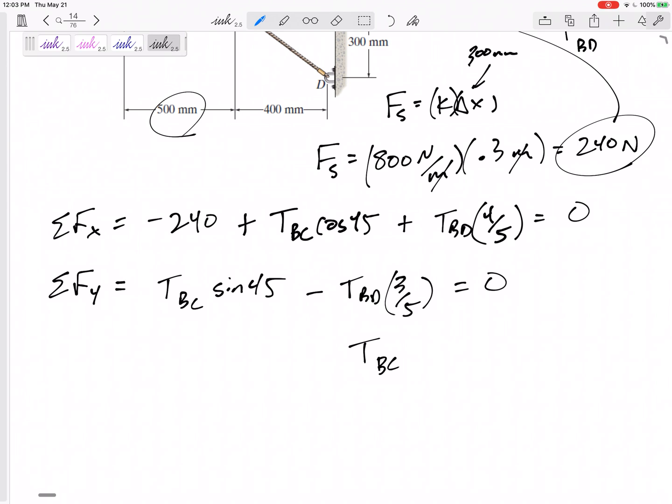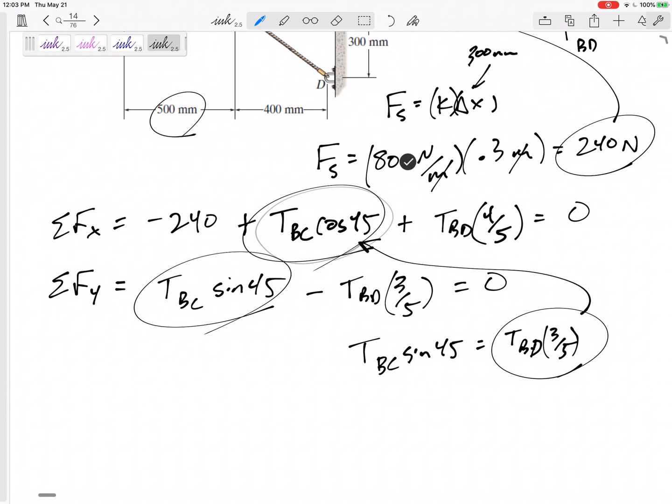But there is a shortcut with 45 degree angles because TBC sine 45 is equal to TBC cosine 45, right? That's the only angle where sine and cosine of that angle are the same. So let me just say TBC sine 45 is equal to TBD three-fifths. And then I would plug that in for TBC cosine 45.